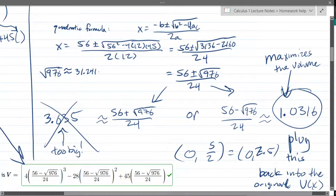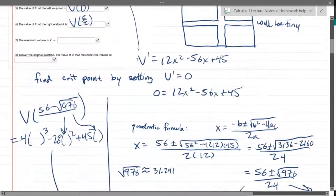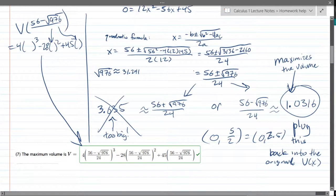And then when I thought about 31 in here, both of them turned out to be positive. So they're both reasonable except that this one that's 56 plus the square root of 976 over 24 is 3.635. And that's too big. I think 2.5 was the maximum that could be. So this one was too big. So we're going to use the other one, which is right here. It's close to 1.03.